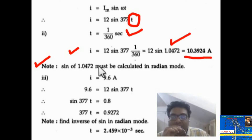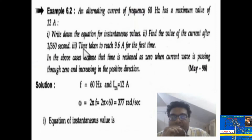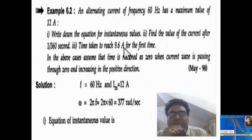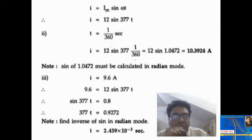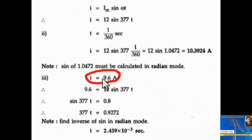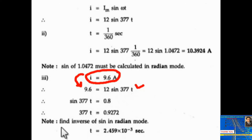The third point: find the time taken to reach 9.6 ampere for the first time. The instantaneous value of current is 9.6 ampere. Put i equal to 9.6 into the equation: 9.6 equal to 12 sin 377t. Solving for t, small t will be equal to 2.459 into 10 to the power minus 3 second.